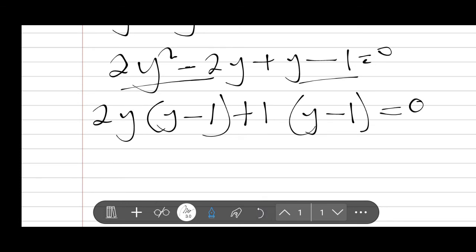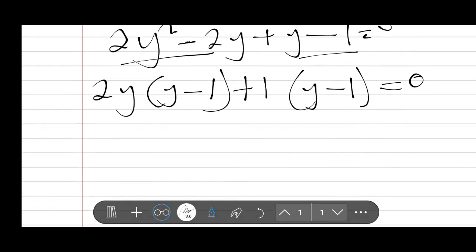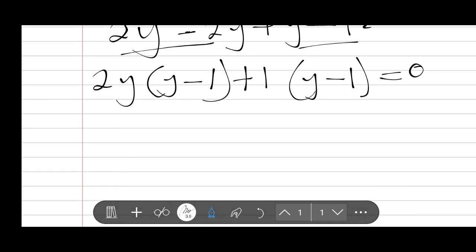It's equal to 0. So in this case now, we'll group them. So group them, 2y plus 1, and then 2y plus 1, and then you get one of the factors here, which is y, which is y minus 1, is equal to 0.